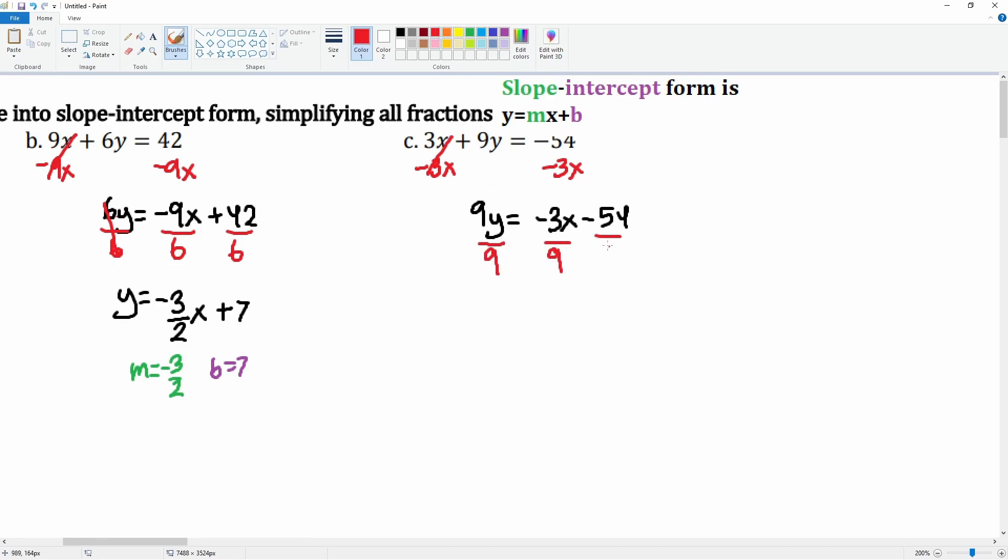9 over 9 does cancel, leaving you with just y equals to negative 3 over 9, which simplifies by taking out 3, so it's 1 over 3x minus 6. So the slope here is negative 1 third, and the y-intercept is b equals to negative 6. There you go, that is how you turn an equation in standard form into slope-intercept form.